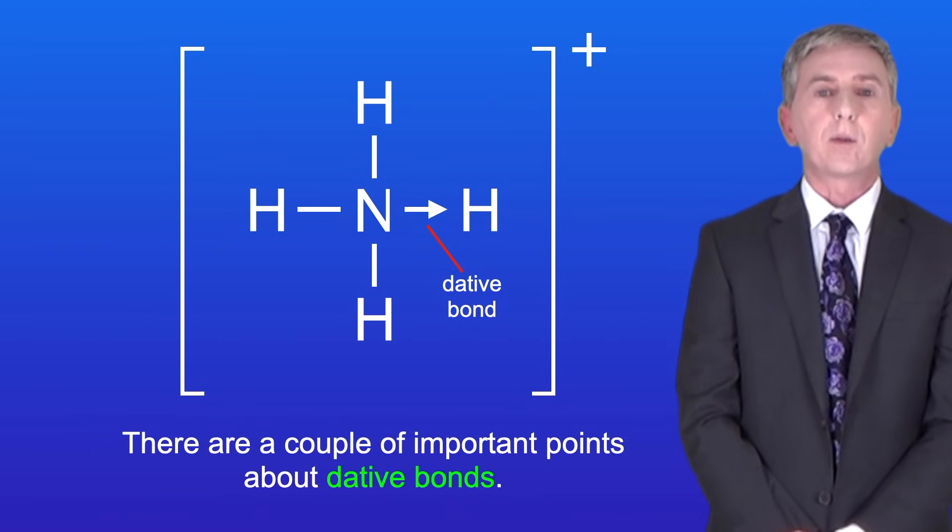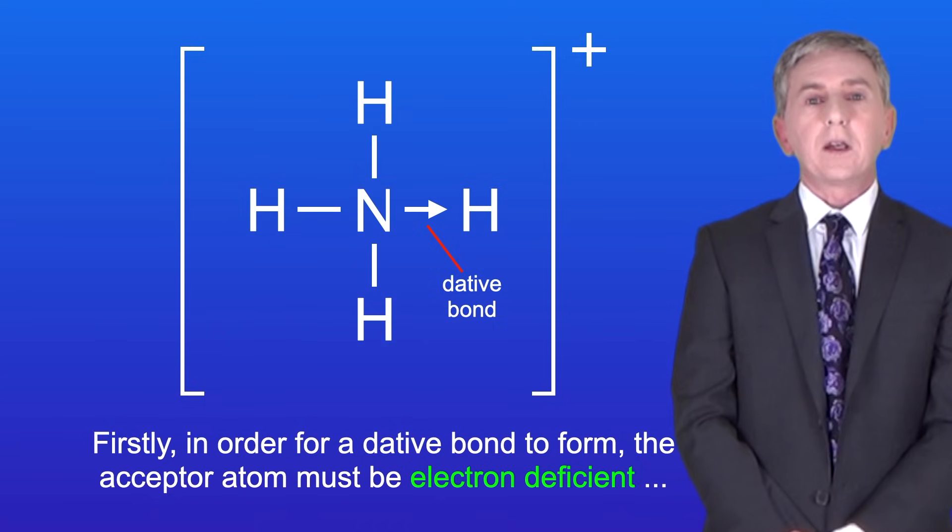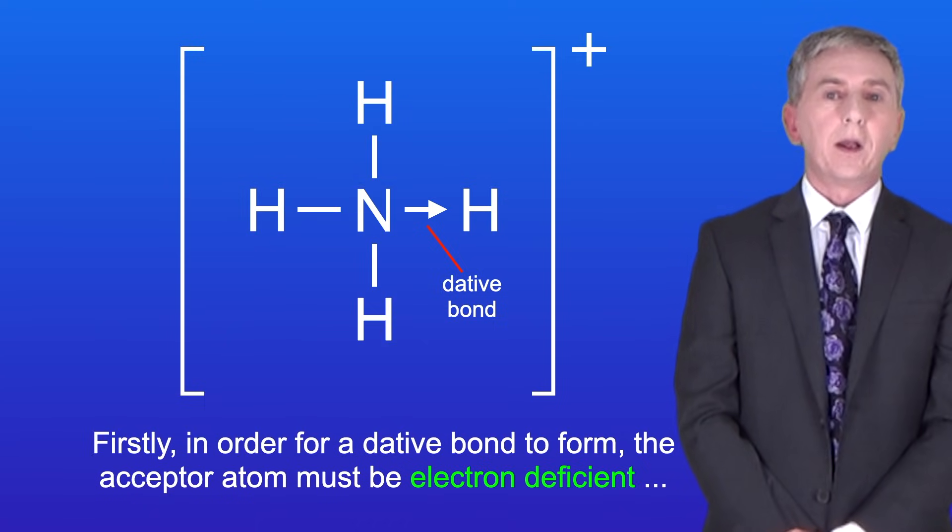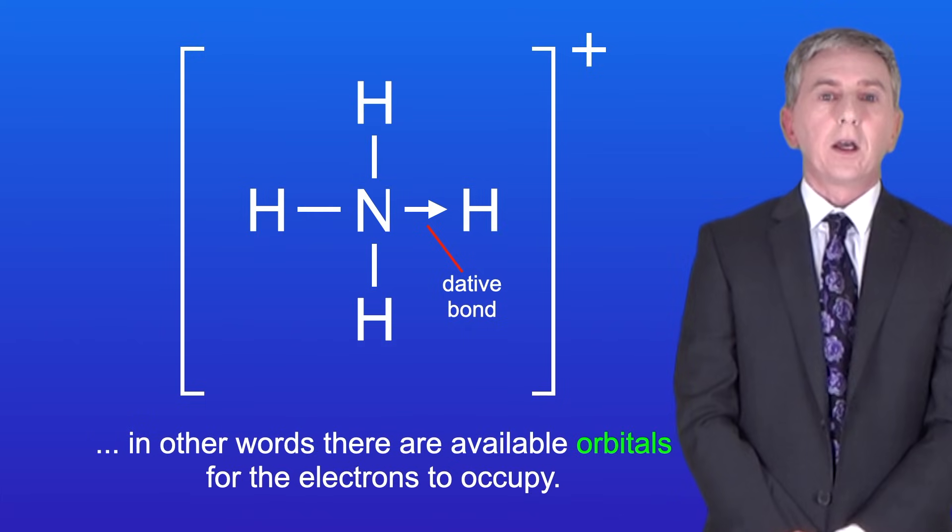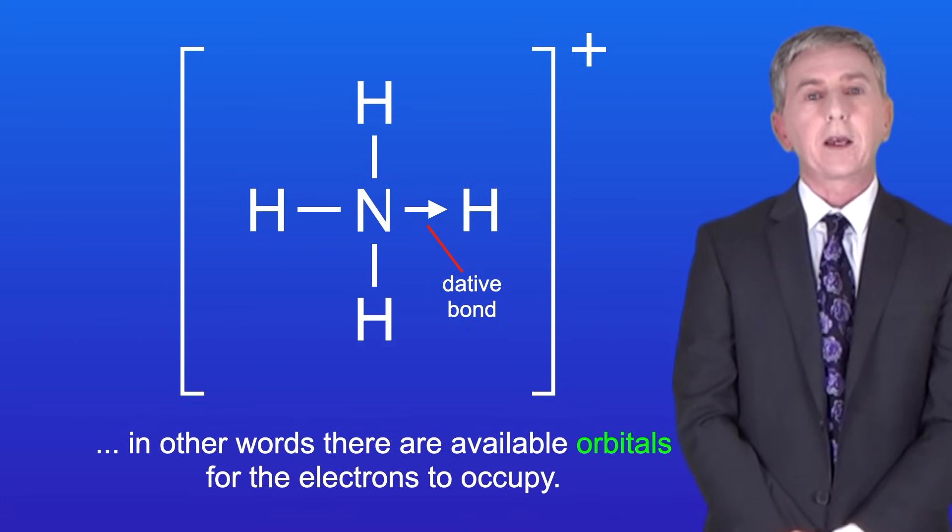Now there are a couple of important points about dative bonds. Firstly, in order for a dative bond to form, the acceptor atom must be electron deficient. In other words, there are available orbitals for the electrons to occupy.